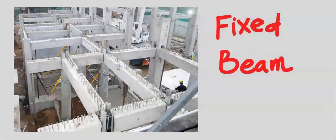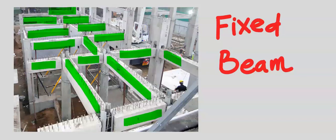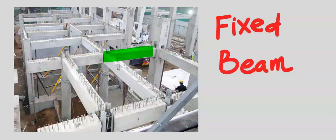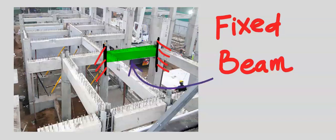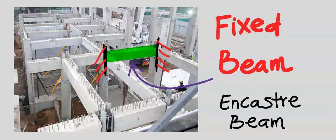A fixed beam is the most rigid type of support or connection. These are beams that make up a structure. This beam is held rigidly at both ends and is restrained from rotation — such a beam is known as a fixed beam. Another name for a fixed beam is an encastra beam.